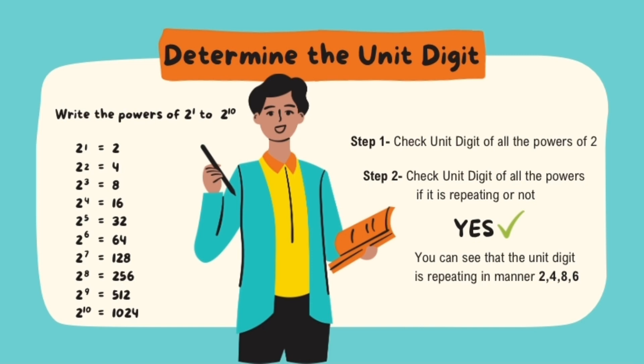It is repeating since the meaning of unit digit is the rightmost number. You can see that the unit digit is repeating in manner 2, 4, 8, and 6.